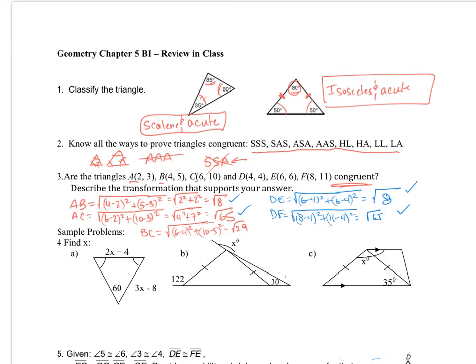Now let's find the last one from E to F. This ends up being the square root of (8 minus 6) squared plus (11 minus 6) squared. So 2 squared is 4, and 5 squared is 25. 4 plus 25 gives me the square root of 29 — and it matches. So are these two triangles congruent? Yes. If at any point something doesn't match one of the other sides, you can stop and conclude it's not congruent.